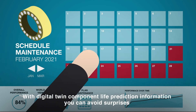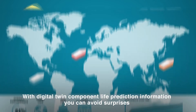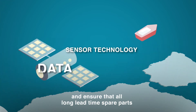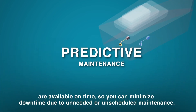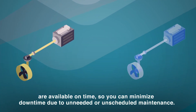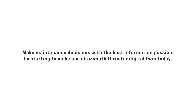With Digital Twin component life prediction information, you can avoid surprises and ensure that all long lead times spare parts are available on time, so you can minimize downtime due to unneeded or unscheduled maintenance. Make maintenance decisions with the best information possible by starting to make use of Azimuth Thruster Digital Twin today.